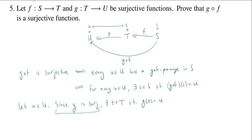Namely, there's some little s in s which f maps to t. So since f is surjective, there exists an s in s such that f of little s is equal to t.